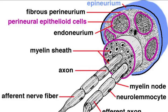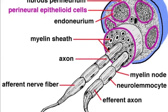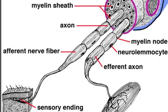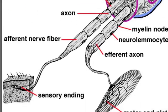Nerve fibers are composed of axons and sheathed or myelinated by neurolemocytes. Here we see two myelinated axons. The axons are myelinated by neurolemocytes.